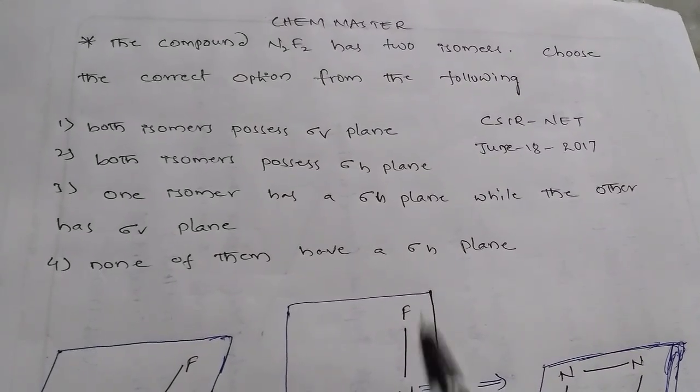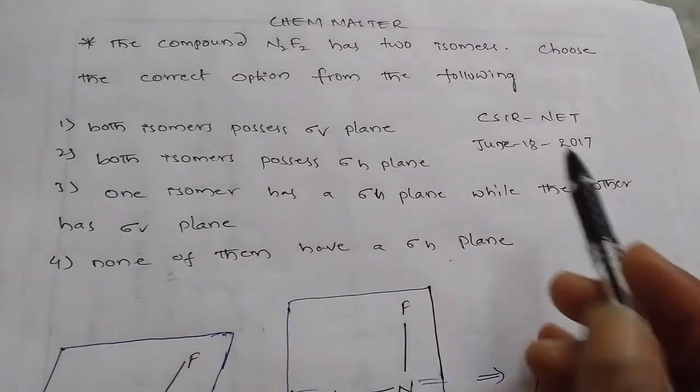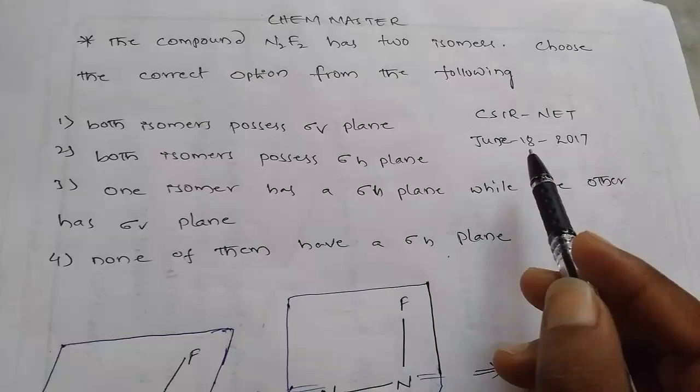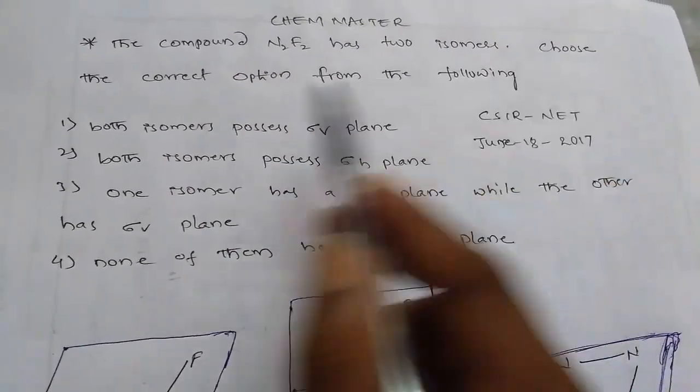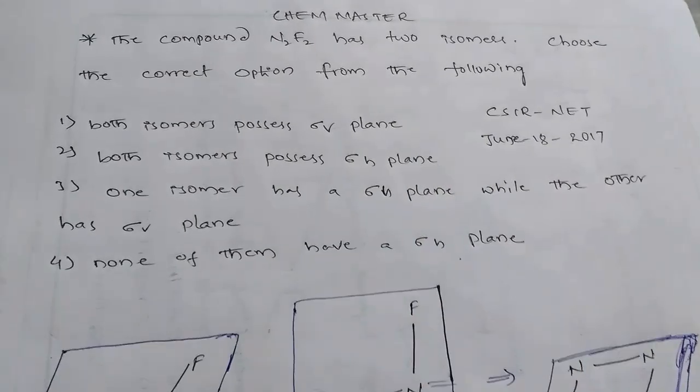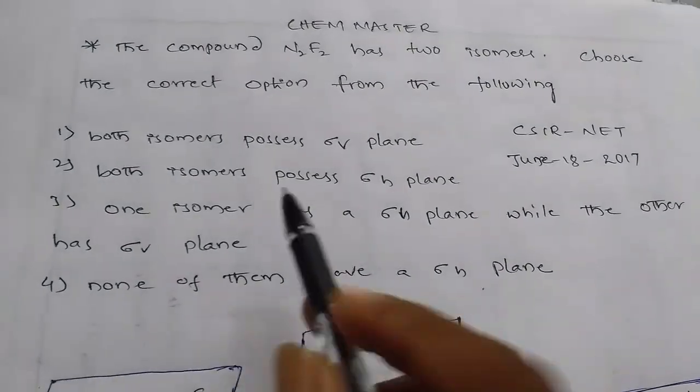Hi, this is your master. This question appeared in CSIR NET in June 18, 2017. The question is: the compound N2F2 has two isomers. Choose the correct option from the following. We have four options.